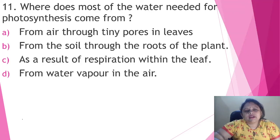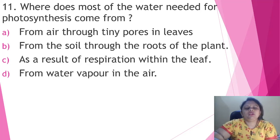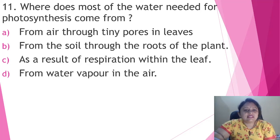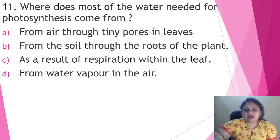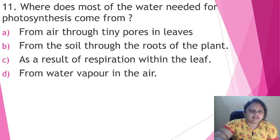Where does most of the water needed for photosynthesis come from? Options: A. from air through tiny pores in leaves, B. from the soil through the roots of the plant, C. as a result of respiration within the leaf, D. from water vapor in the air. We know that water needed by plants comes through the root from the soil. The correct answer is option B, from the soil through the roots of the plant.